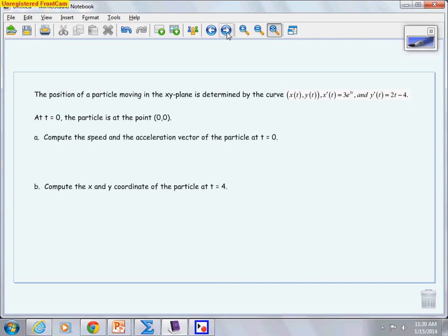Speed is going to be a review of what we just talked about. This one is actually easier because we already have dx/dt and dy/dt, so we don't have to derive. We are going to be putting 0 in. So what we have is 3e^0 squared, plus when I put 0 into y', I'm going to get -4 squared.